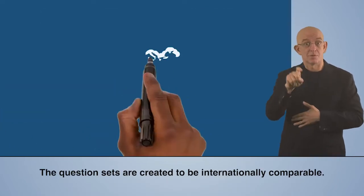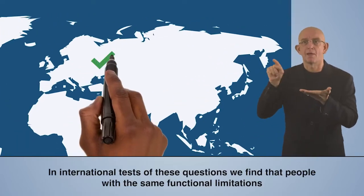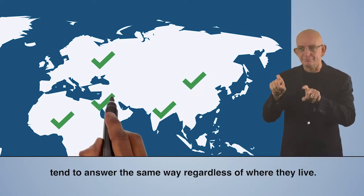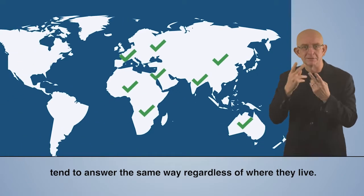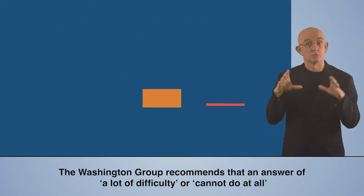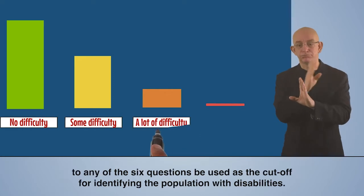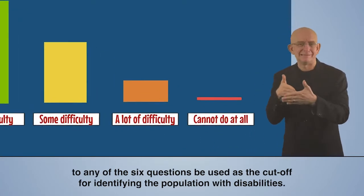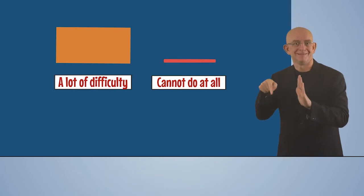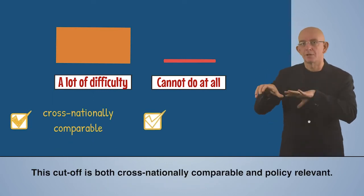The question sets are created to be internationally comparable. In international tests of these questions, we find that people with the same functional limitations tend to answer the same way, regardless of where they live. The Washington Group recommends that an answer of 'a lot of difficulty' or 'cannot do at all' to any of the six questions be used as the cut-off for identifying the population with disabilities. This cut-off is both cross-nationally comparable and policy-relevant.